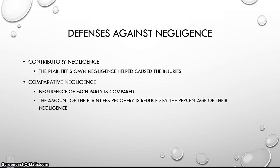Comparative negligence is where the negligence of each party is compared, and the amount of the plaintiff's recovery is reduced by the percentage of their negligence. For example: CJ is driving down the road and gets in a car accident with Haley. The jury finds the damages are worth $100,000. But they also find out that 10% of the problem was Haley's and only 90% was CJ's. So in that instance, Haley would only receive $90,000 because that's the percentage CJ was negligent for.